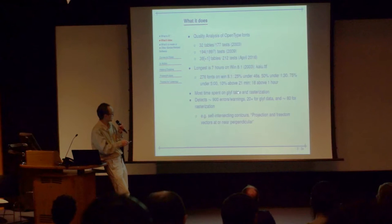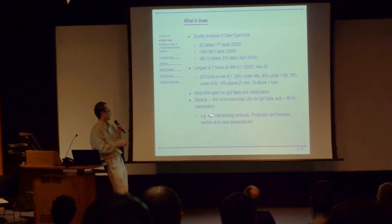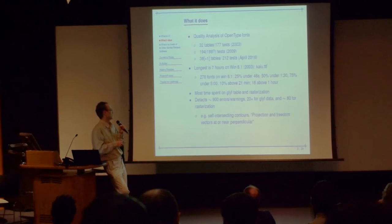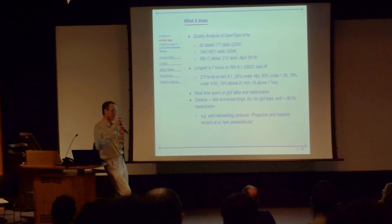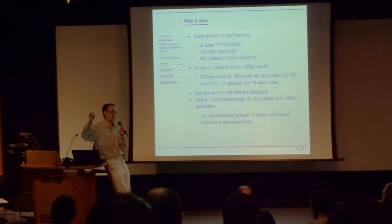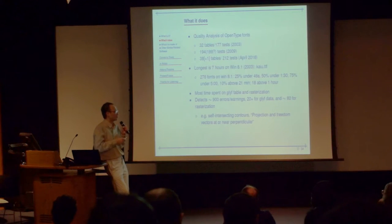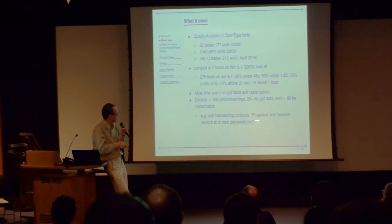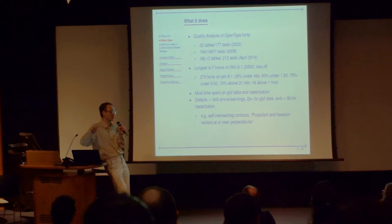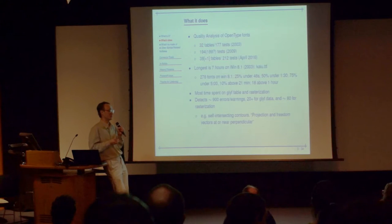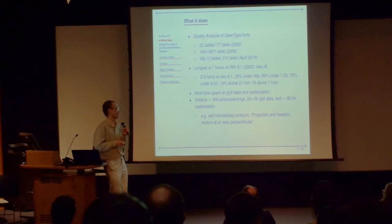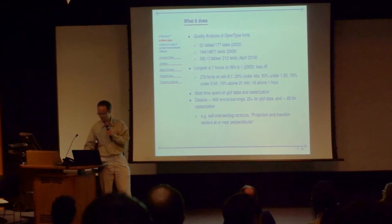A typical glyph error would be where a contour crosses itself — a self-intersecting contour. A typical rasterization error involves hinting, which is the process of moving contours slightly for a particular resolution so that it becomes easier to read. The direction of movement is called the freedom vector, and the direction used to calculate how much to move is called the projection vector. If those two are perpendicular, that means you're not moving, which indicates something is wrong with rasterization.